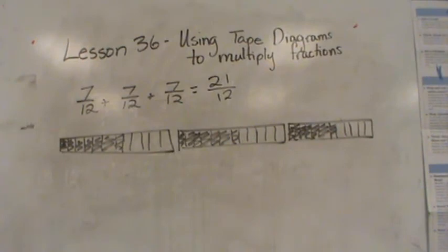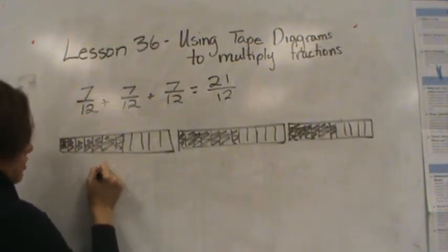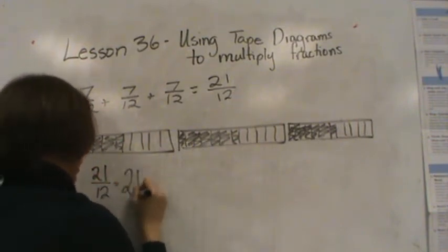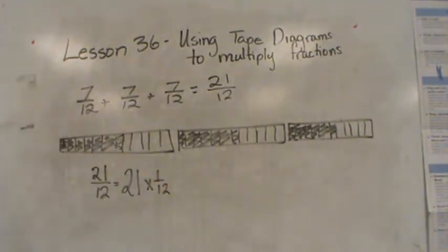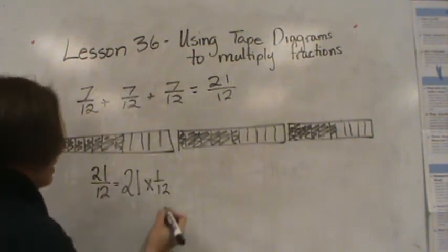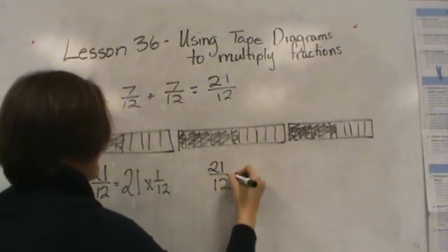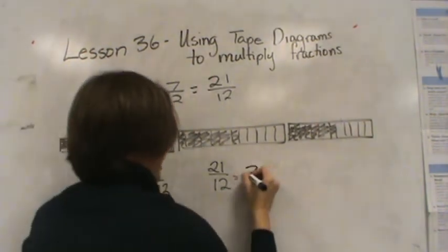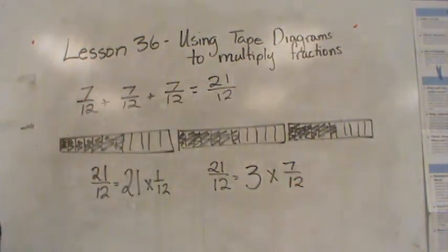Now let's talk about that in multiplication terms. So 21/12 is like saying 21 times 1/12, because if you counted 1/12 twenty-one times, you'd have 21/12. Or I can do it another way: 21/12 is the same as saying 7/12 times 3. I have 3 groups of 7/12.